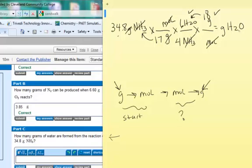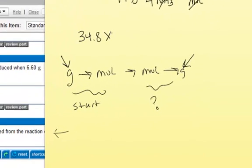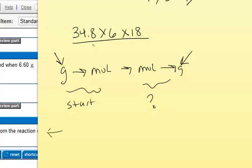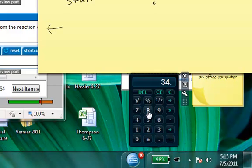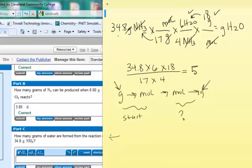Which is what I want my answer in. Mathematically I have 34.8 times 6 times 18 divided by 17 times 4. And so when I put that in the calculator which I have here at the bottom, I'm going to have 34.8 times 6 times 18 divided by 17 equals divided by 4 equals. And I'm going to get a number 55.27059.